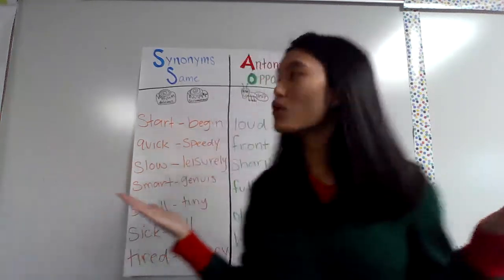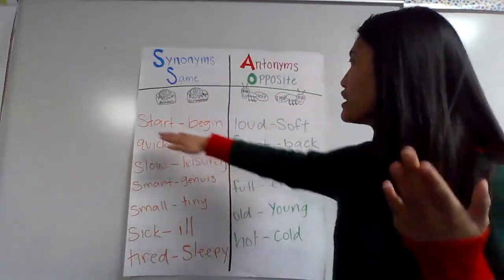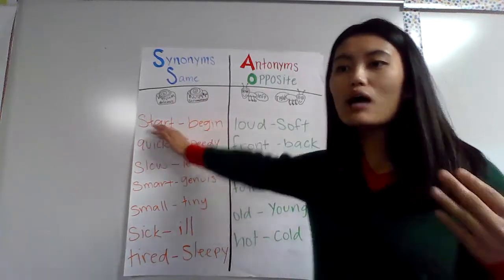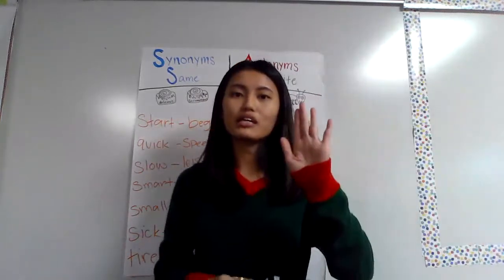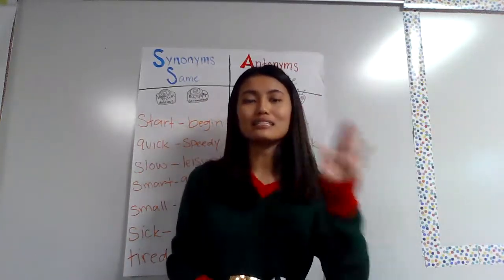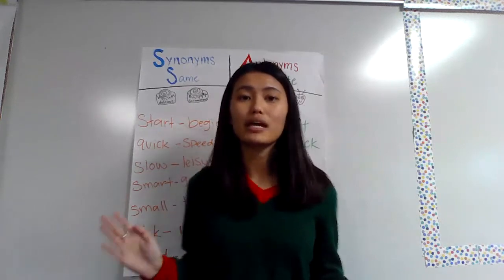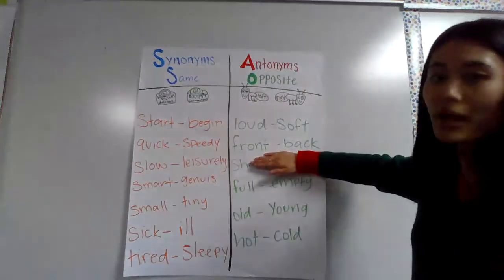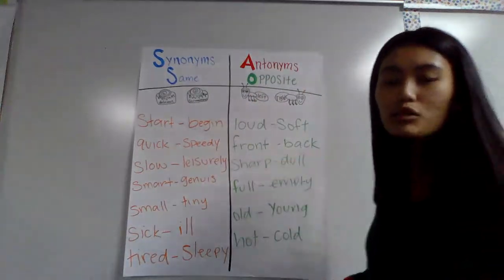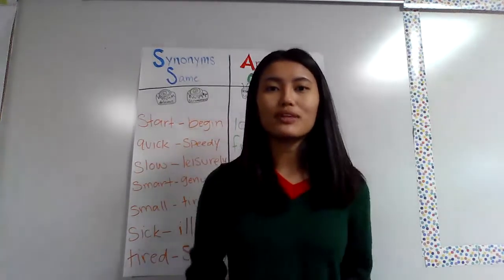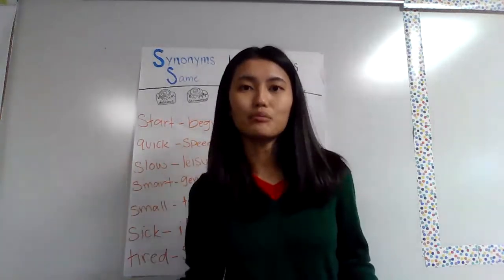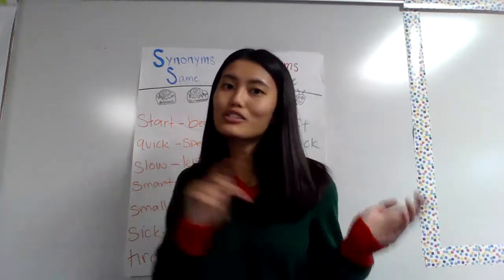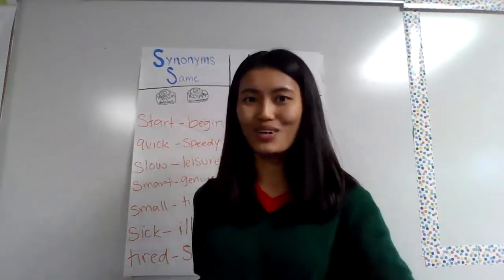For example, if I had start and begin on one of my cinnamon rolls, I would move it to the baking sheet that says synonym, because they mean the same thing. But if I had front and back on a cinnamon roll, I would move it to the baking sheet that says antonyms, because they have opposite meanings. So you guys are going to go do that now.